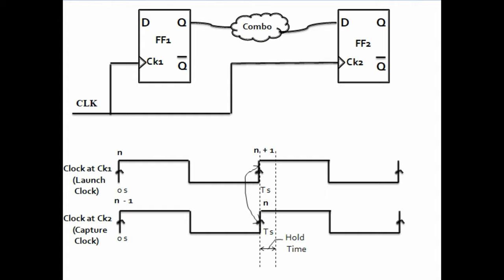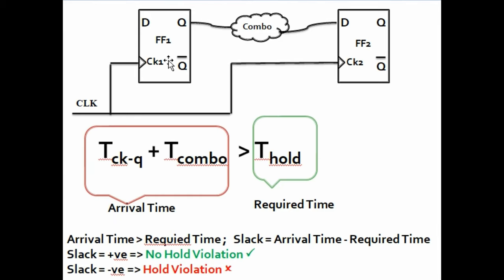So, basically what are we making sure for hold? That the arrival time of the n+1 data should at least be greater than the hold time of the capture flip-flop. Basically, this current data should be held for enough time for it to be captured reliably, and that enough time is its hold time. So, basically we can say that the clock-to-Q delay plus the combinational delay should be greater than the hold time of the capture flip-flop. This is the equation for hold time — clock-to-Q plus combo is the arrival time, while t_hold is the required time. For hold, your arrival time of n+1 data should be greater than the required time which is hold time.